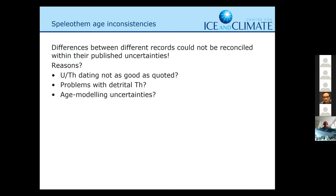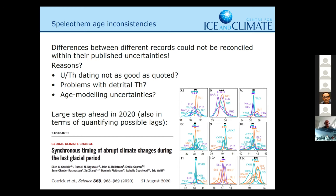Maybe there are problems with dirty samples, or detrital thorium, or maybe it's age-modeling uncertainties. I favor the last one — I think it's because we often have relatively few dates in speleothems, so there's some age modeling going on, and the growth rates of speleothems vary hugely, which could add a lot of uncertainty. Ellen Corrick led a fantastic paper in 2020 basically trying to sort this by applying the same growth modeling and the same assumptions to many speleothem records to see if things came together. And they did come together — she kind of solved the problem about having inconsistencies between speleothem records.